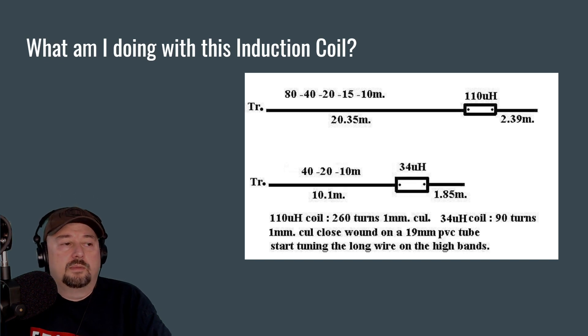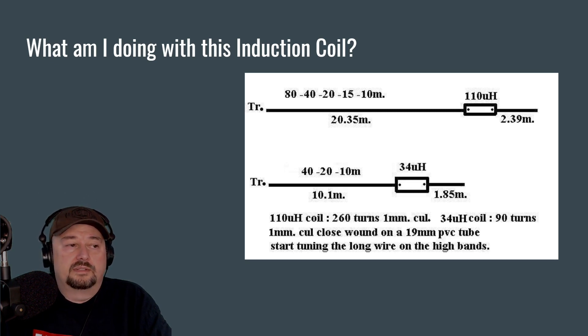Now if you take a look at this diagram on the lower portion, there's an antenna depicted as 40-20-10 meters, and that means this antenna should be resonant or work well across those different bands. You can see the overall length of this antenna is 10.1 meters, then you have your loading coil or induction coil, and then it's 1.85 meters.